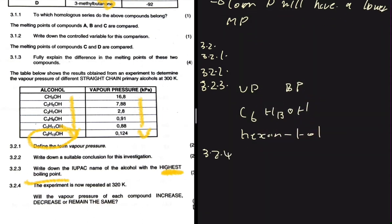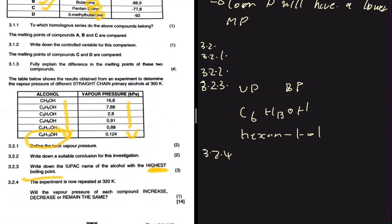For question 3.2.4, the experiment is repeated at 320 Kelvin. Will the vapor pressure of each compound increase, decrease, or remain the same? Please let me know in the comments which answer you chose — increase, decrease, or remain the same — and I will pin the correct answer.